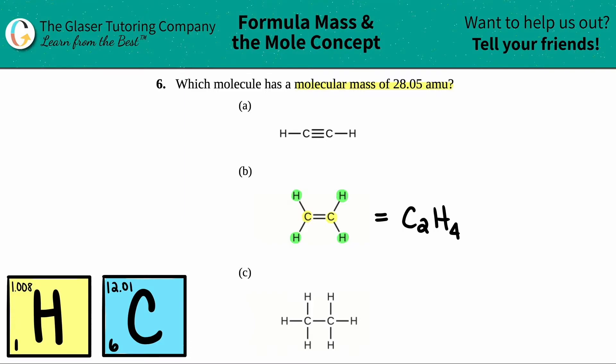Now when we're doing molecular masses and they give you this type of covalent compound with these lines, aka bonds, you disregard the bonds. Pretend that they're not even there. You're just zoning in on the actual element, literally the letter. Now what we have to do is find out the mass for this.